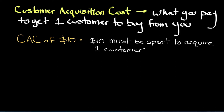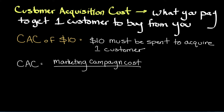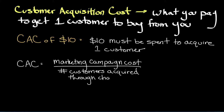One quick and easy method to calculate your customer acquisition costs is to take the total cost of a marketing campaign and divide that figure by the total number of customers acquired through the campaign. As an example, say we run a month-long Facebook ad campaign and spend $150 total. We could determine this by looking at our campaign results for the month.